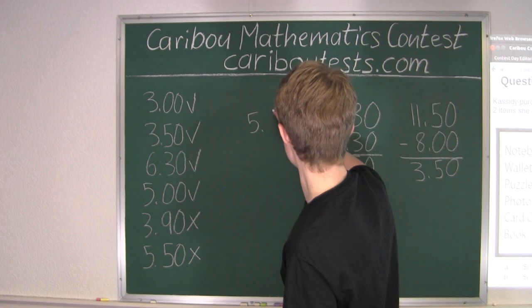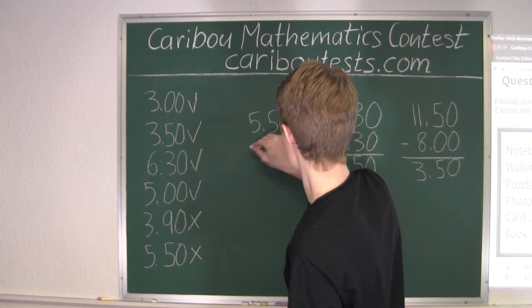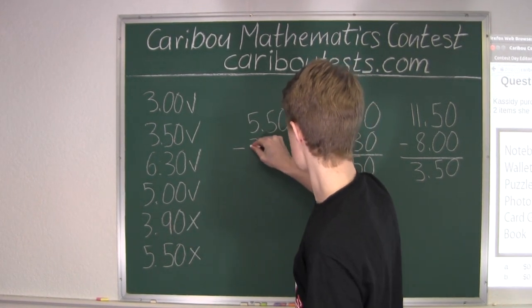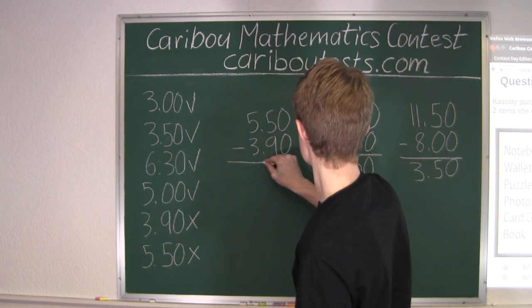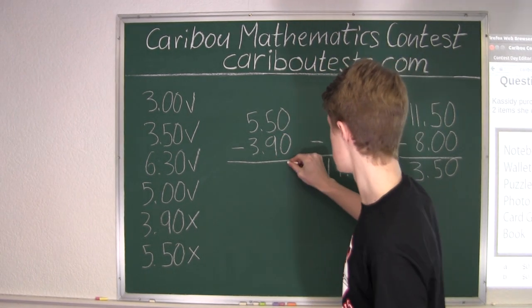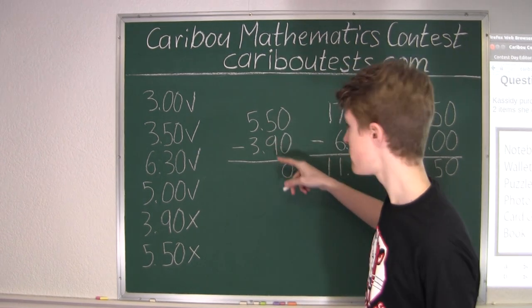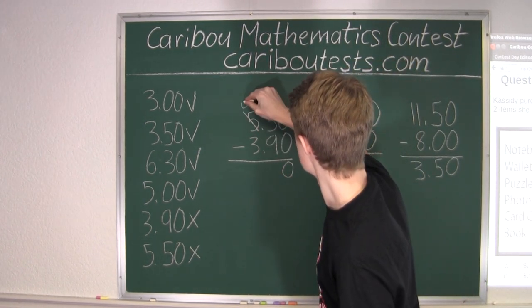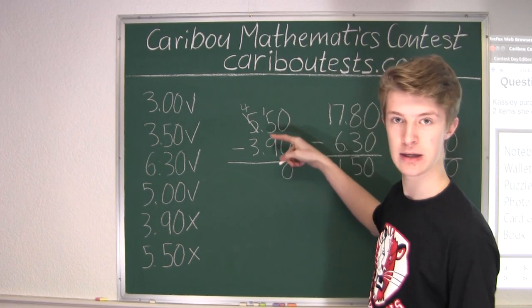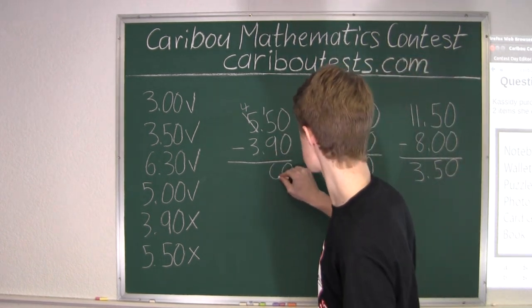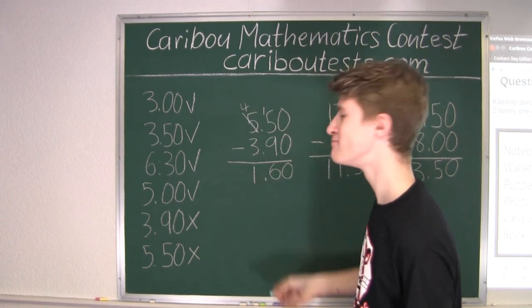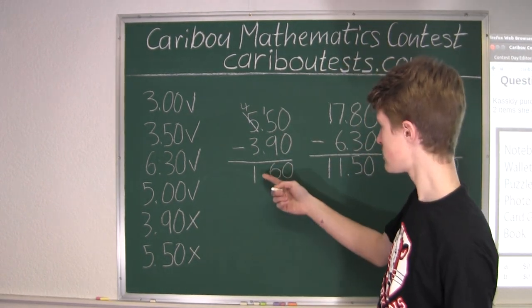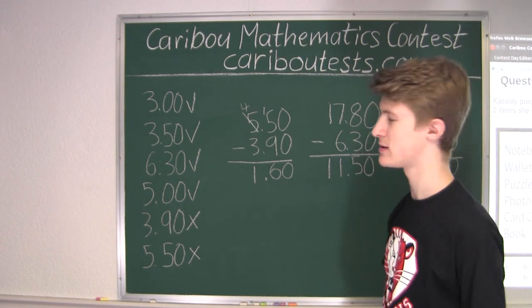So, 0 minus 0 is 0. Now, we can't do 5 minus 9, so we must take from the 10. So, 15 minus 9 is 6, and 4 minus 3 is 1. Therefore, the difference is $1.60.